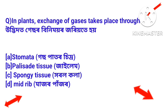Next question: In plants, exchange of gases takes place through — utbidor gas or bini moa zori ote hoye.